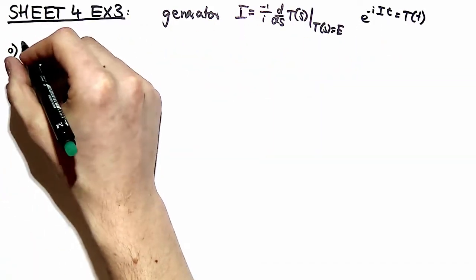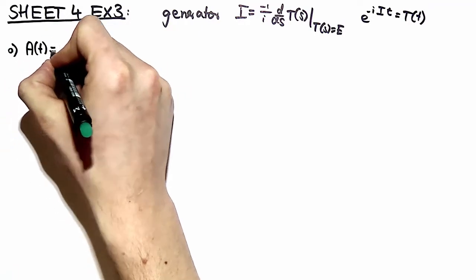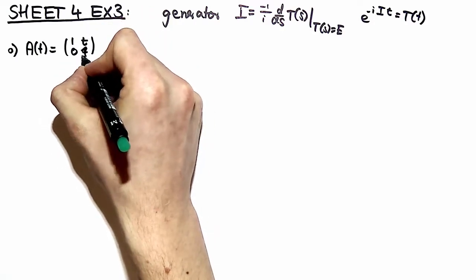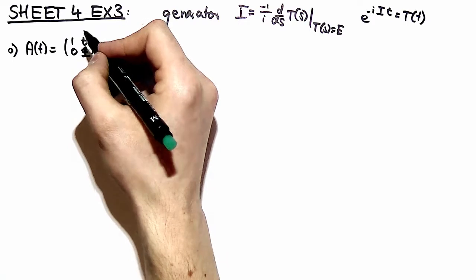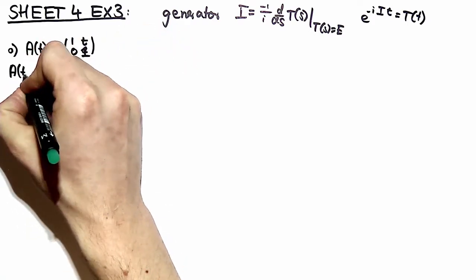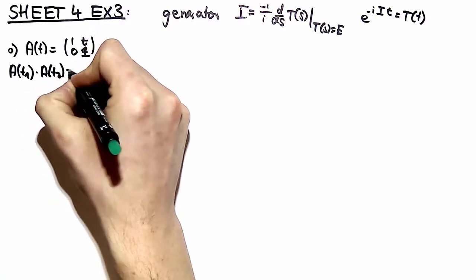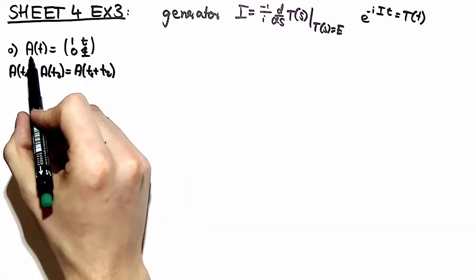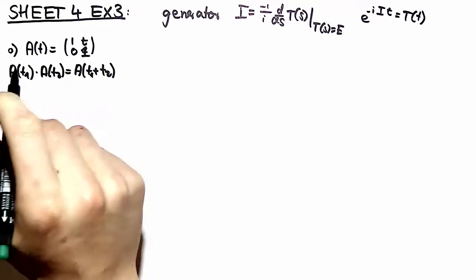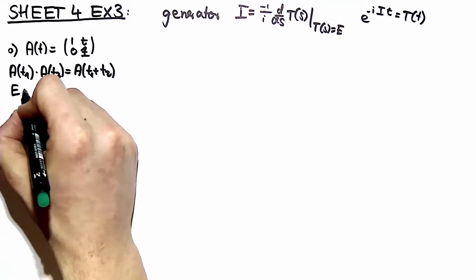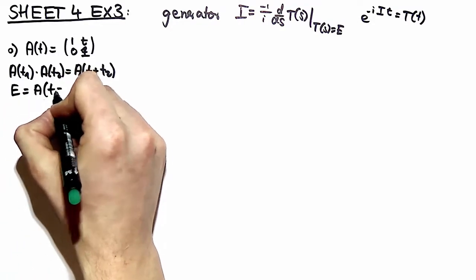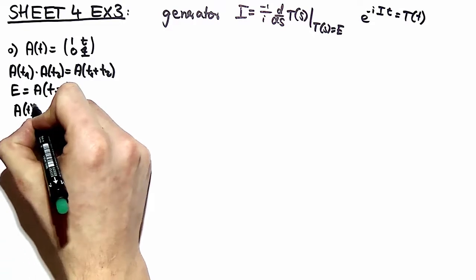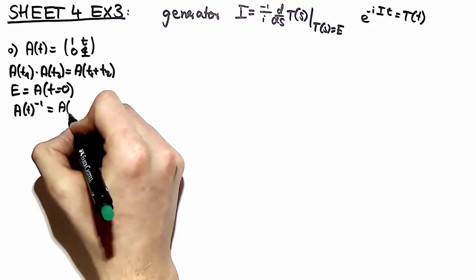In part A of exercise number three, we define a matrix A(t) by taking the identity matrix with the parameter t in the upper right corner. We have to show that this is a group, and yes it is. If you go into the details of matrix multiplication, you can see that the product of two matrices is still in the parameter space of this representation. The identity element is defined by taking t equal to zero, giving the identity matrix, and the inverse is obtained by taking minus t.